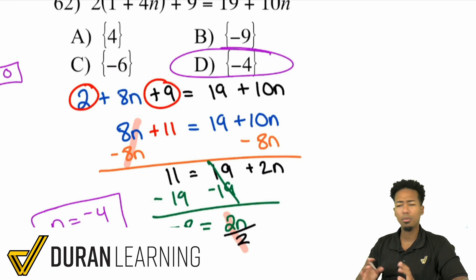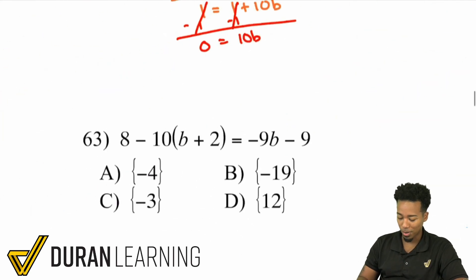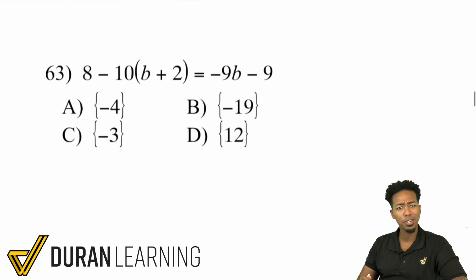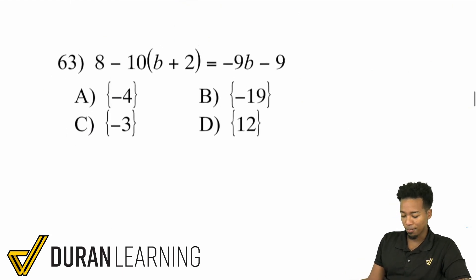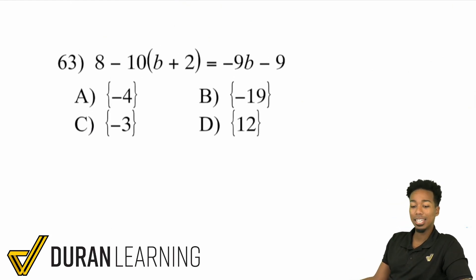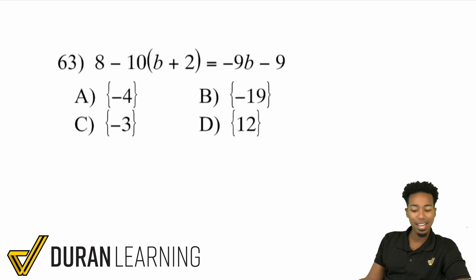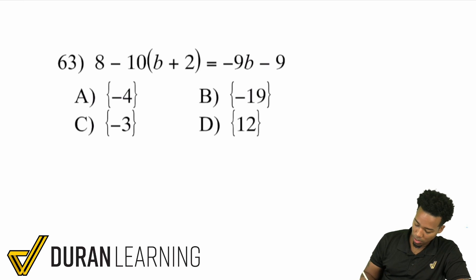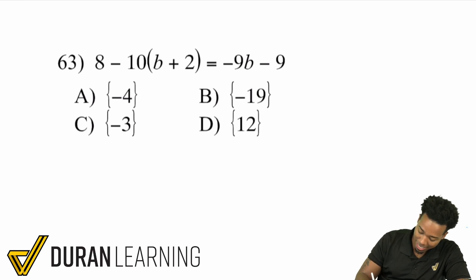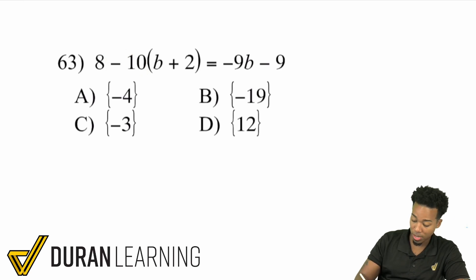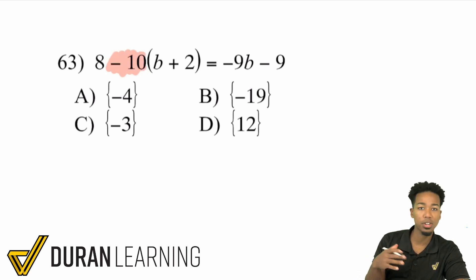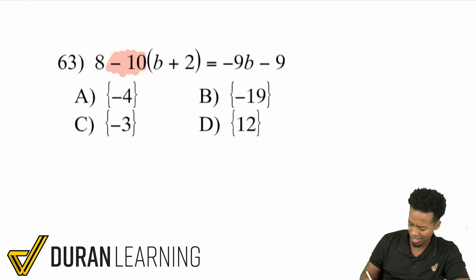I'm going to go through four to five more problems to make sure you have a good grip on this. Problem 63: we have 8 minus 10 multiplied by (b plus 2) equals negative 9b minus 9. I'm going to distribute that negative 10 — remember it's a negative 10 you're distributing, so be careful. One of the biggest mistakes I see is people ignoring the signs completely.